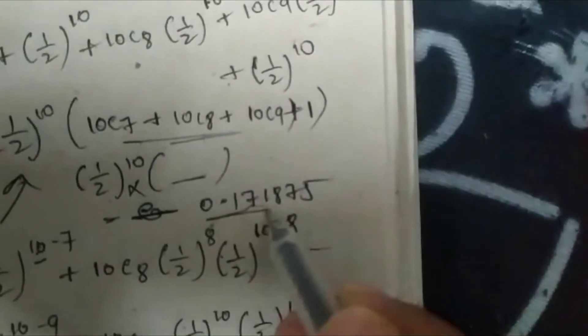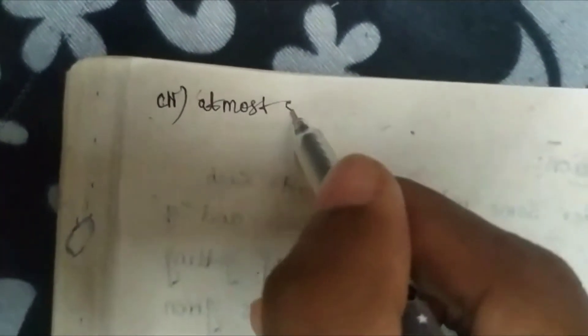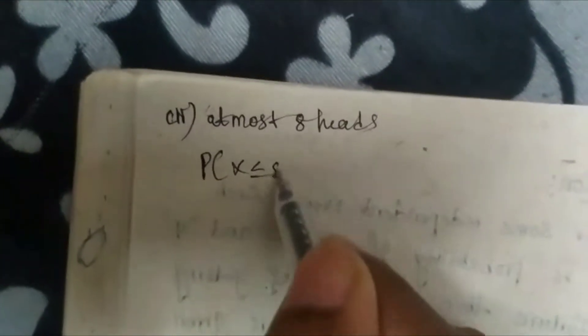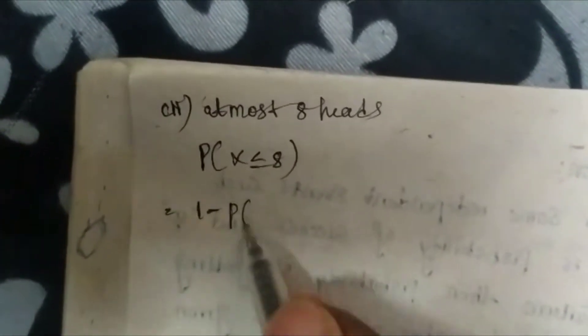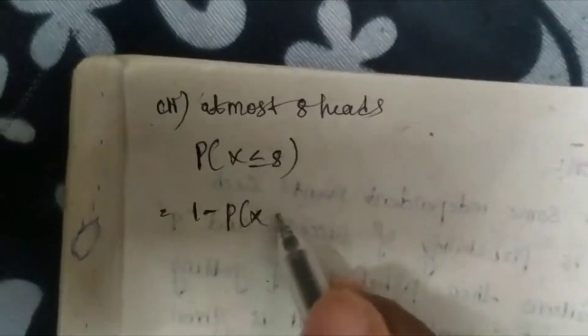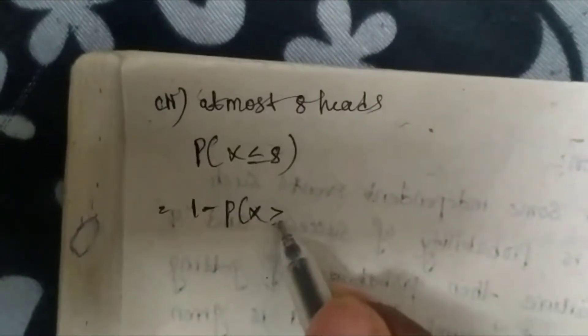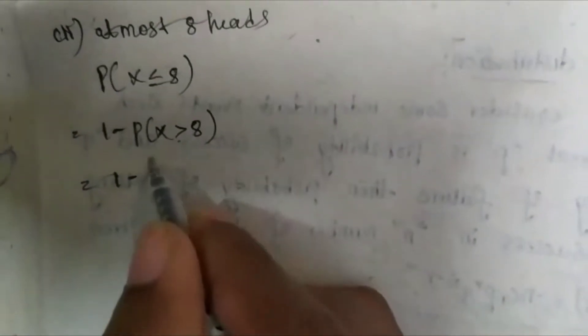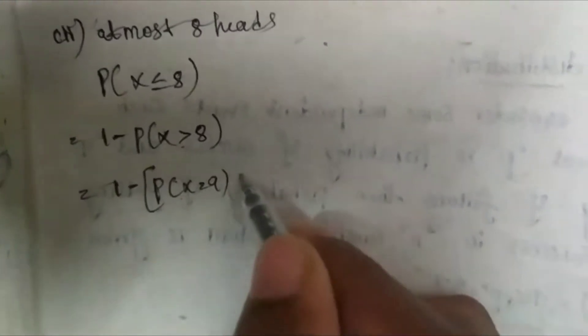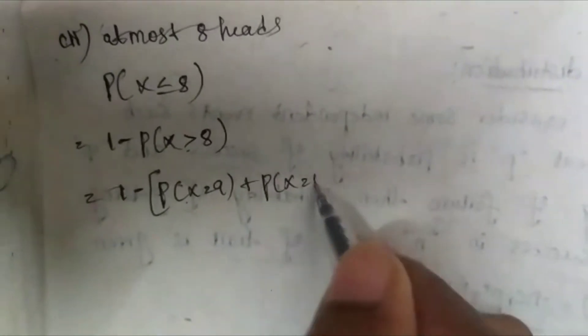For at most 8 heads, that means P(X ≤ 8). We can write this as 1 - P(X > 8), which means 1 - [P(X = 9) + P(X = 10)].